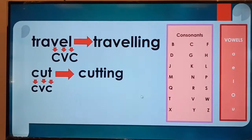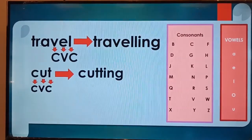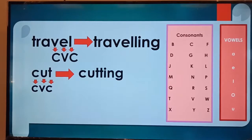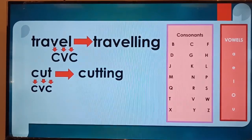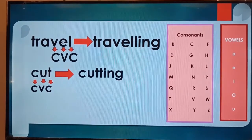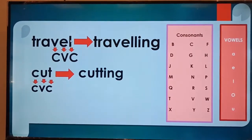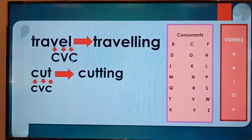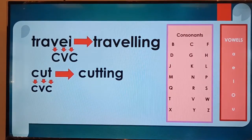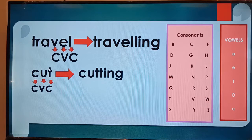Look at the other examples. Travel: look at the last three letters — v is consonant, e is vowel, l is consonant — CVC. You will double the ending l: travel — travelling. Cut: c is consonant, u is vowel, t is consonant — CVC. Cut — cutting.